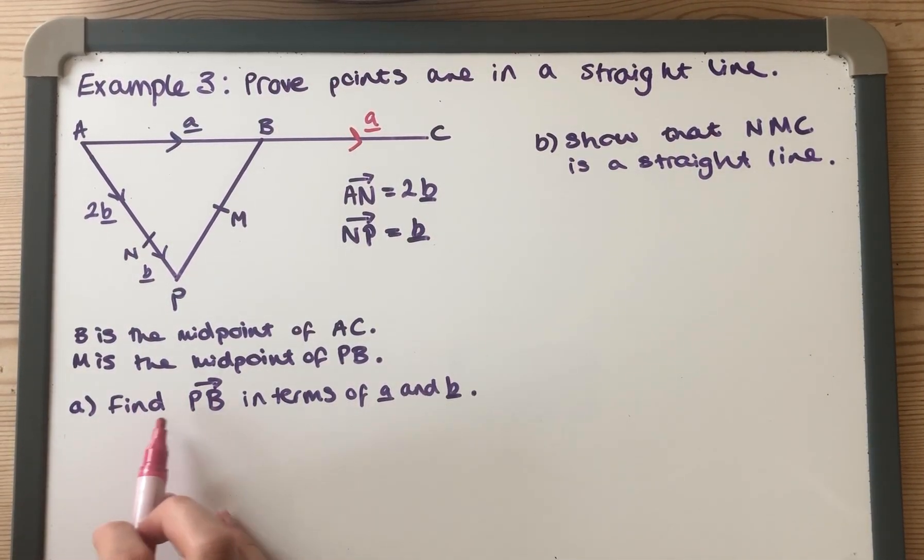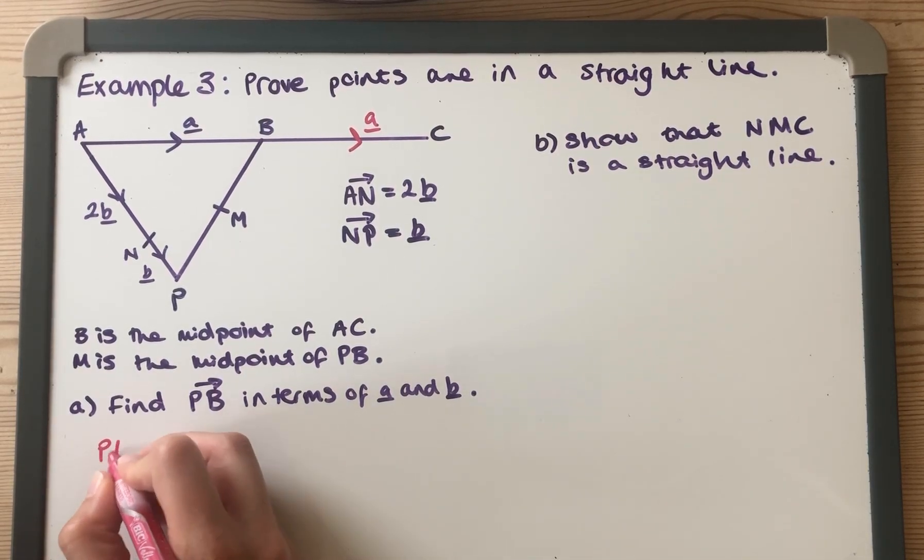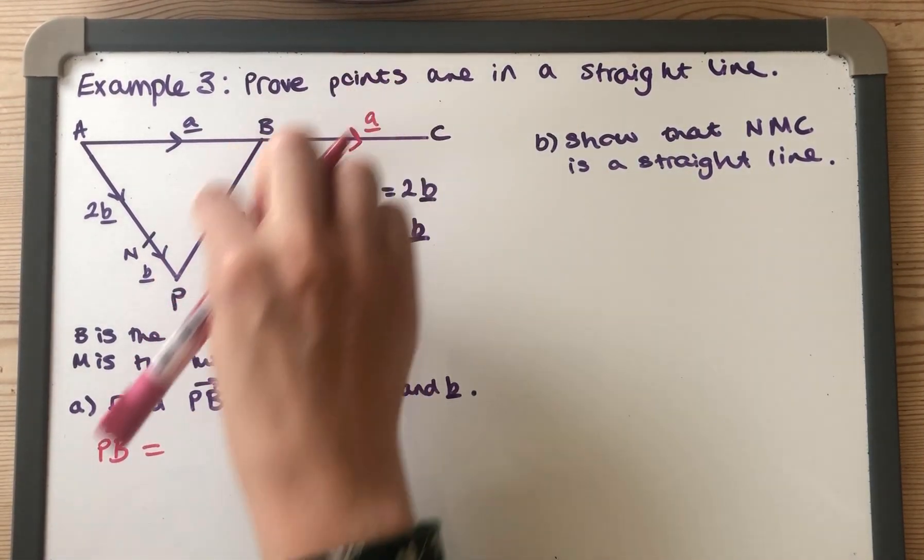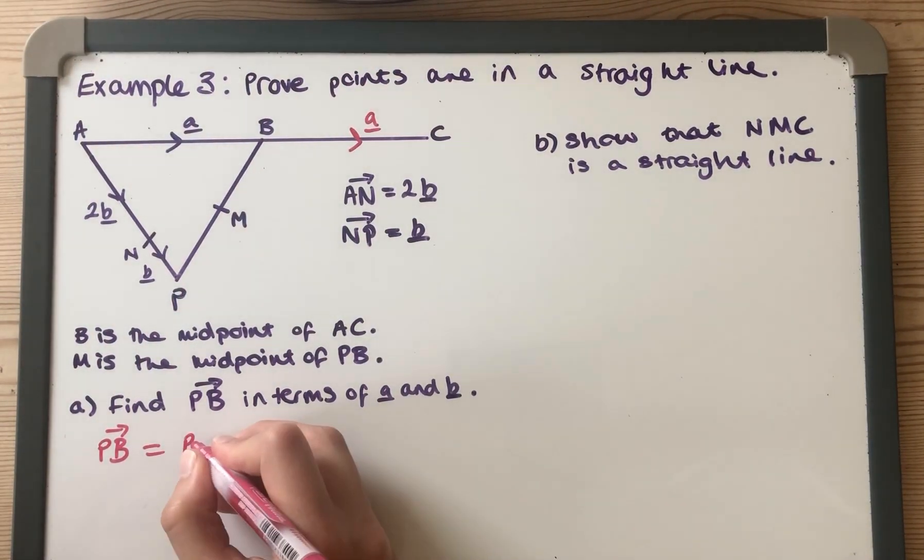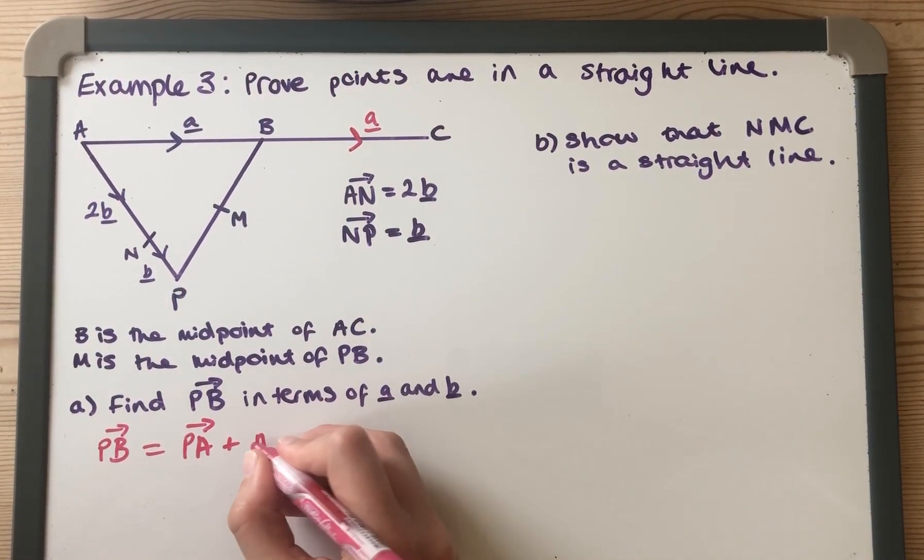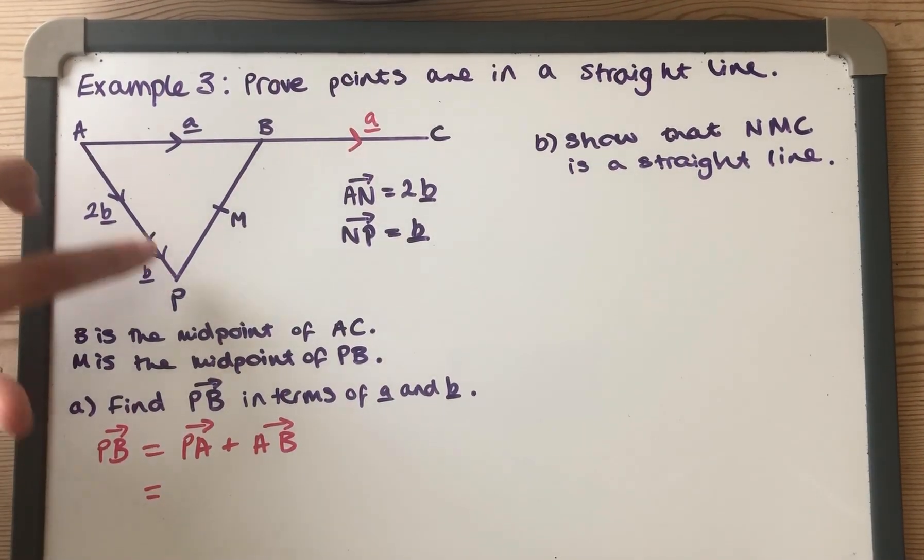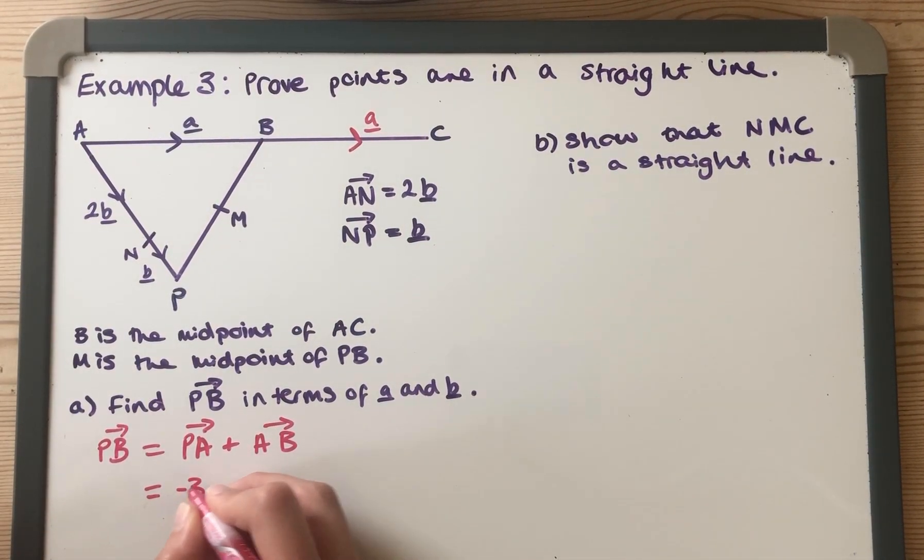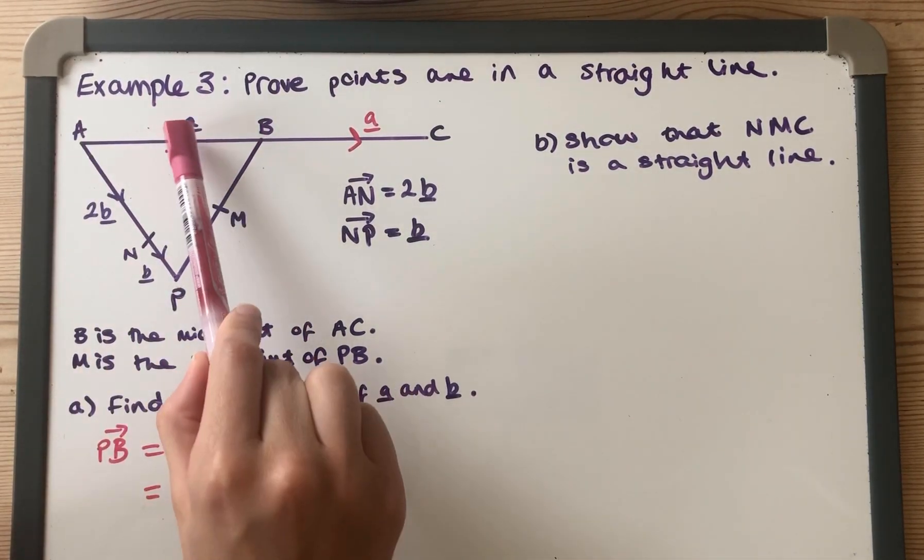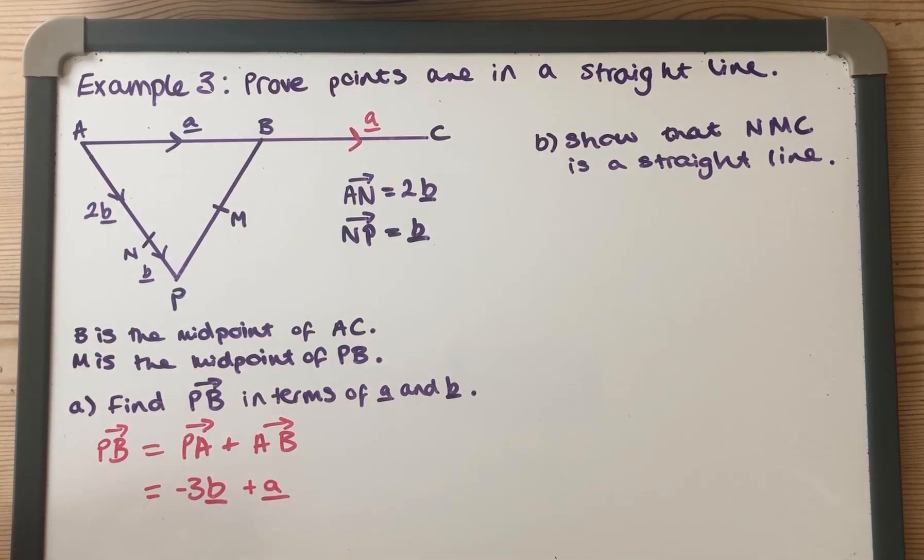So our first thing we've got to do is find PB in terms of A and B. So to find PB, I'm actually going to have to go this way around, I'm going to have to go P to A and then A to B. Now to go from P to A, I've actually got to go P to N and then N to A, so that's minus B minus another 2B, so that's minus 3B altogether, and then I've got to go from A to B which is just adding on that A. So we can write that this way around as well. So we can either write it as minus 3B plus A or A minus 3B.